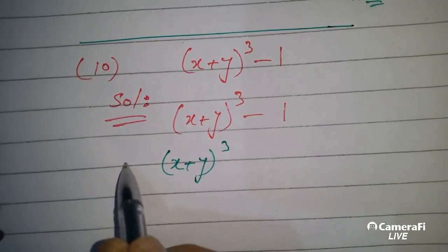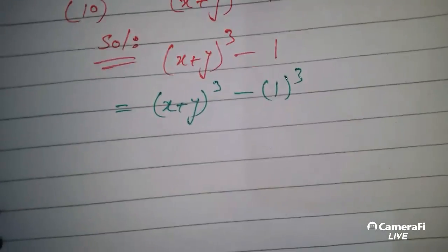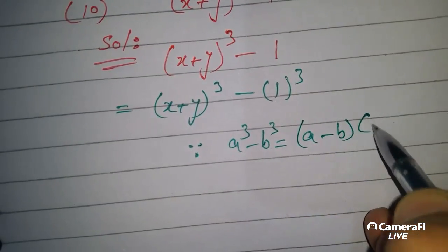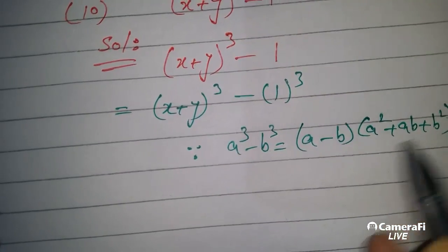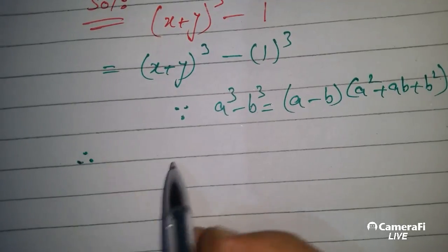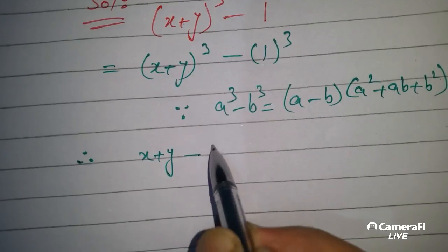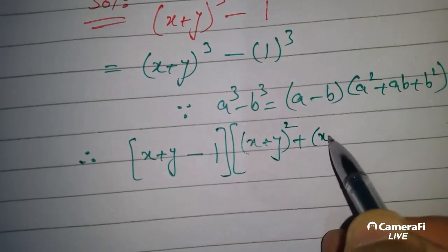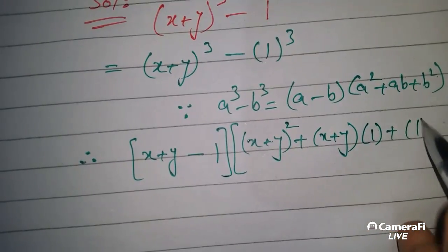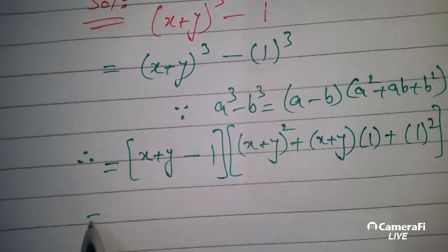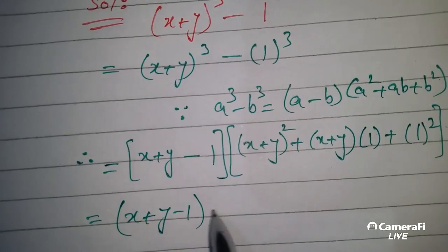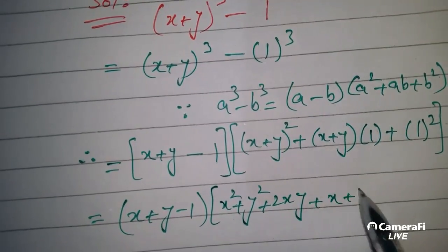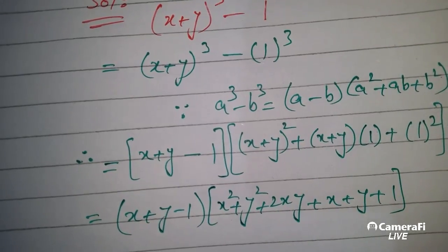Question number 10 can be written as the cube of the first term minus the cube of the second term. Applying the formula: a³ - b³ = (a-b)(a²+ab+b²). Therefore, it becomes: (first term minus second term) times (square of the first term plus first term into second term plus square of the second term), and further expanding gives the final answer.